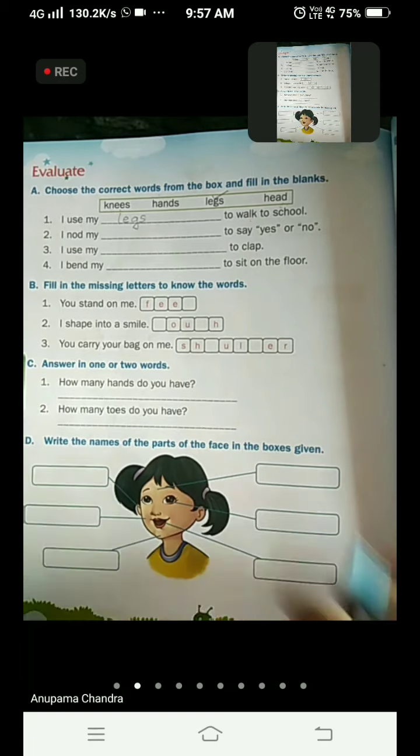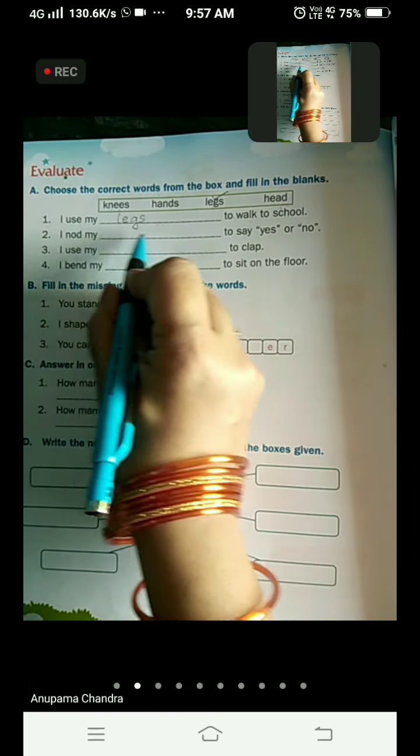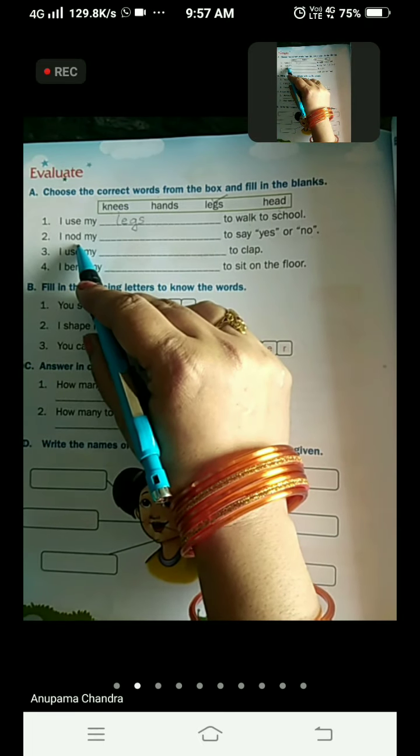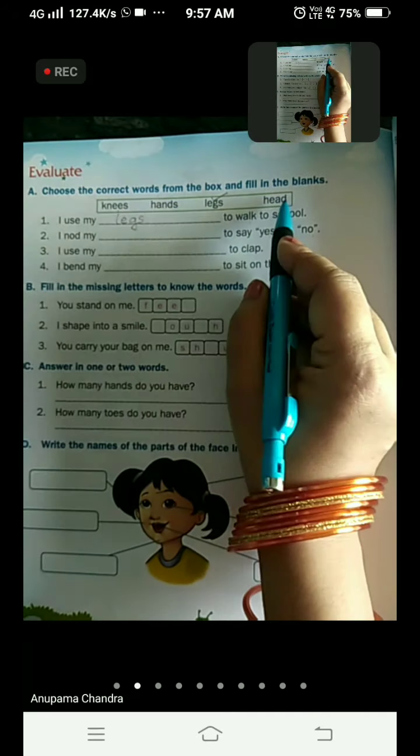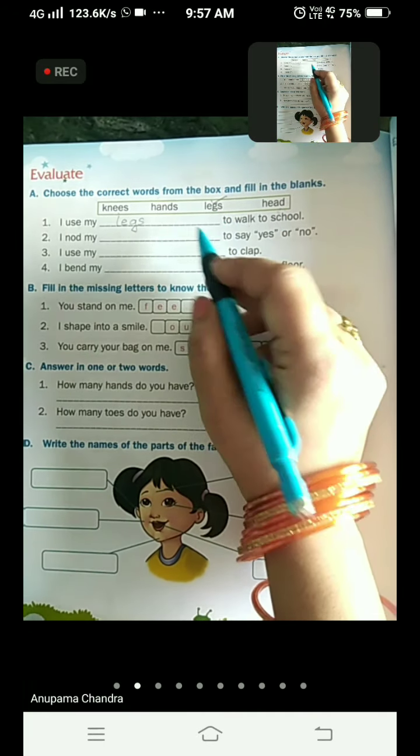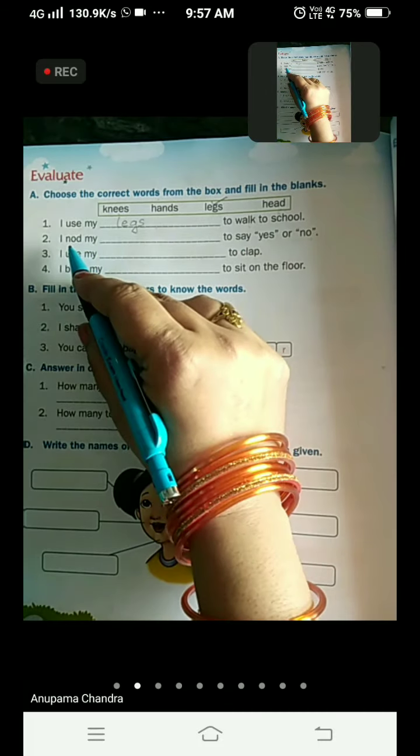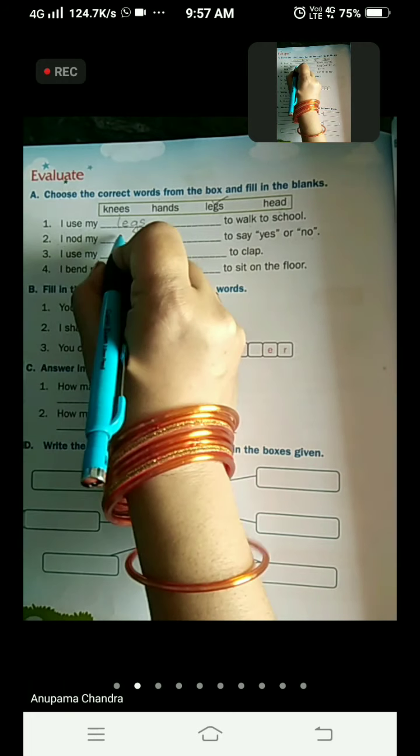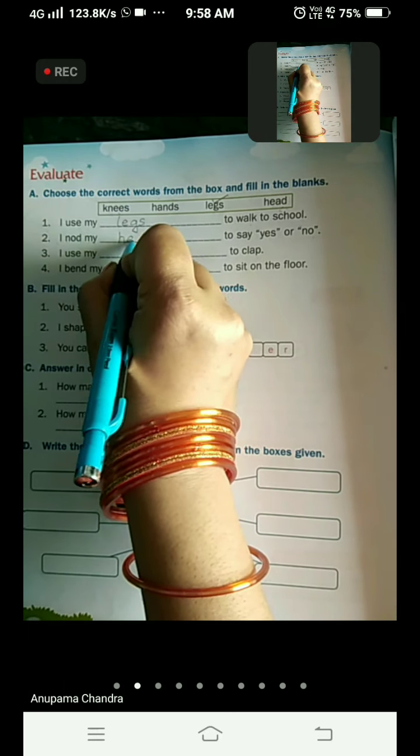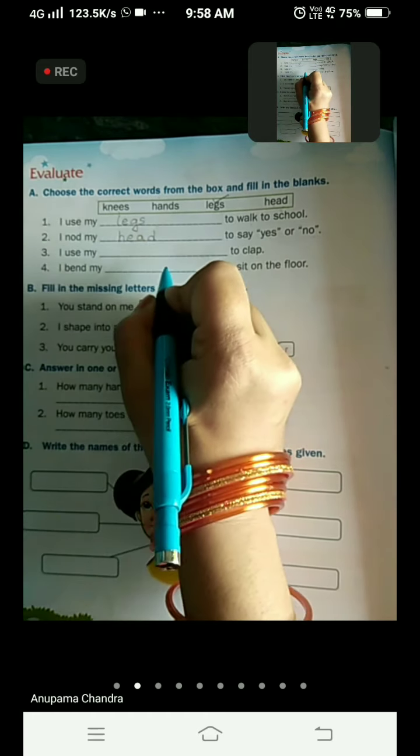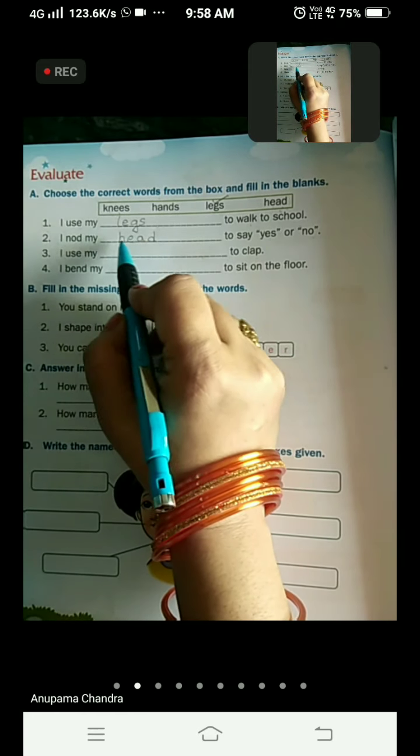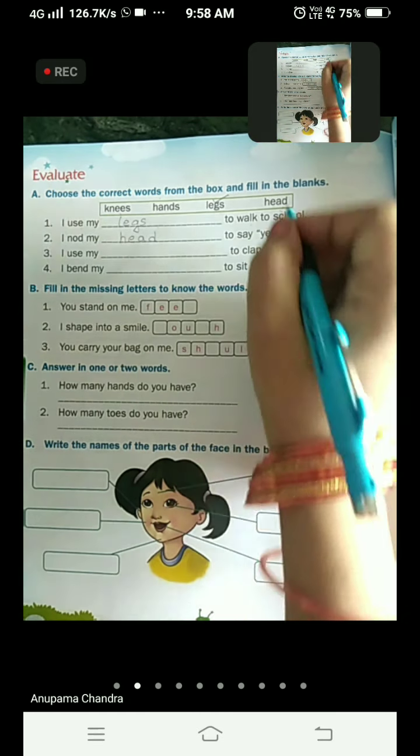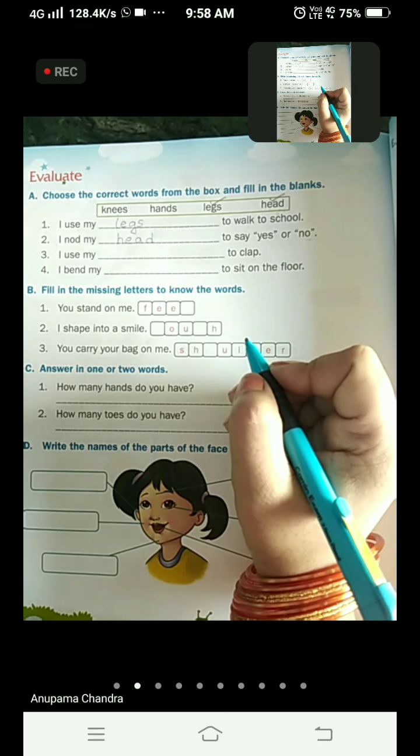Come to the second one. I nod my dash to say yes or no. What do we nod? What do we use to nod? Legs is already used in the blank, right? So what do we use to nod? That is our head. I nod my head. Write with me children, H E A D head. I nod my head to say yes or no. And tick over here in the box.